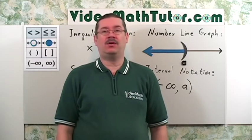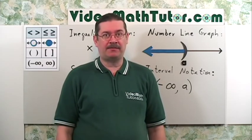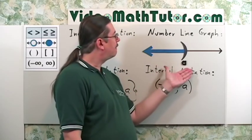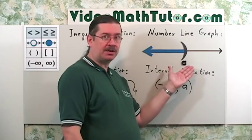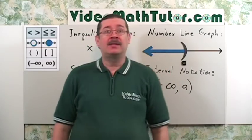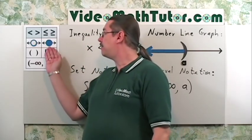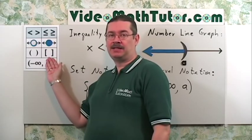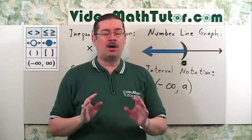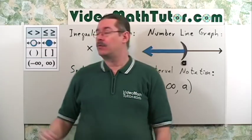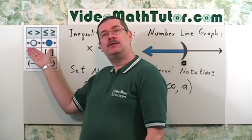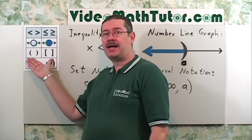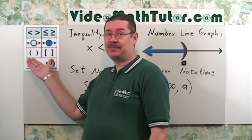Be aware of an alternate number line graph notation. In place of the open dot, a parenthesis is used directly on the number line. If you have a closed dot, a square bracket is used in its place. Your textbook or math instructor may have you use a parenthesis or square bracket instead of an open or closed dot.